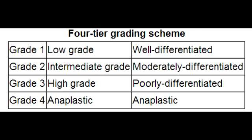What does grade 4 high grade indicate? Grade 4 high grade indicates that it's poorly differentiated, meaning it's more chaotic and it's anaplastic.